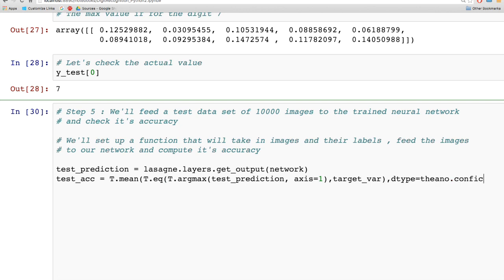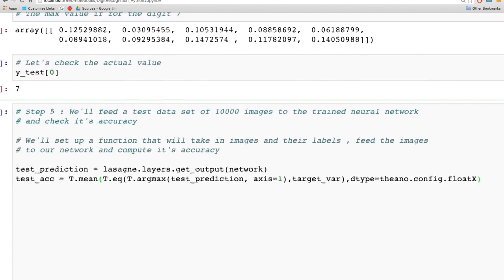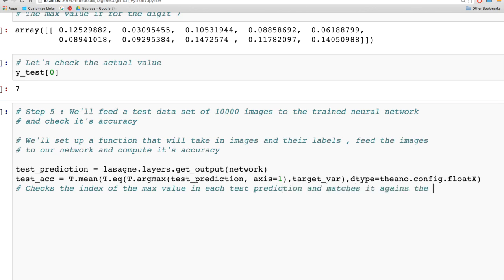T.mean, T.eq, and argmax are all functions in Theano. But you could implement the basic idea using a for loop and NumPy: find the max value in each array, compare it with the corresponding test output value, increment a counter if correct, and compute the final accuracy.